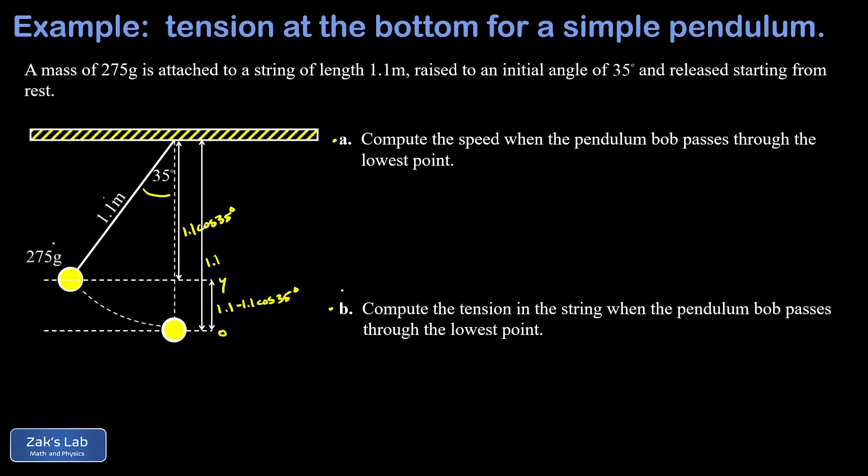Now that we have that initial height, we can apply energy conservation to figure out the speed at the lowest point. So we have a simple conversion from gravitational potential energy, that's mgy, to kinetic energy, one half mv squared. The masses cancel out of that, and we multiply both sides by 2 and square root the result. And we get the familiar solution, v equals square root 2gy.